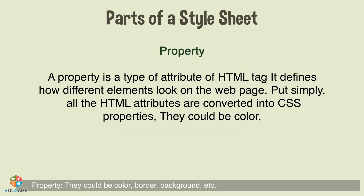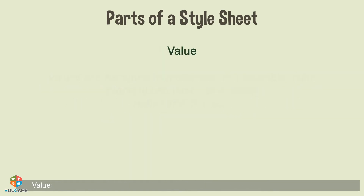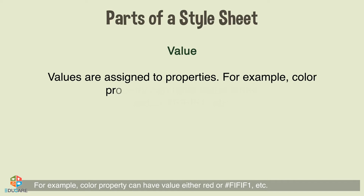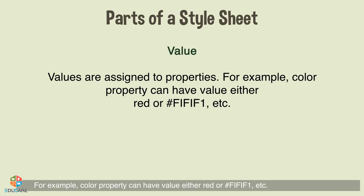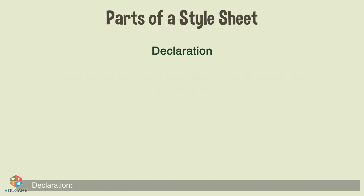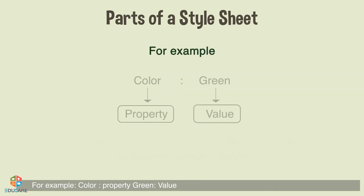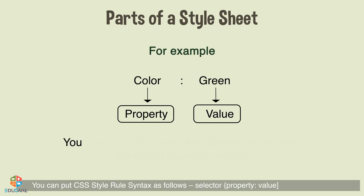All the HTML attributes are converted into CSS properties. They could be color, border, background, etc. Values are assigned to properties; for example, the color property can have a value of either red or #f1f1f1, etc. A property and its value collectively is known as a declaration. For example, color is the property and green is the value.